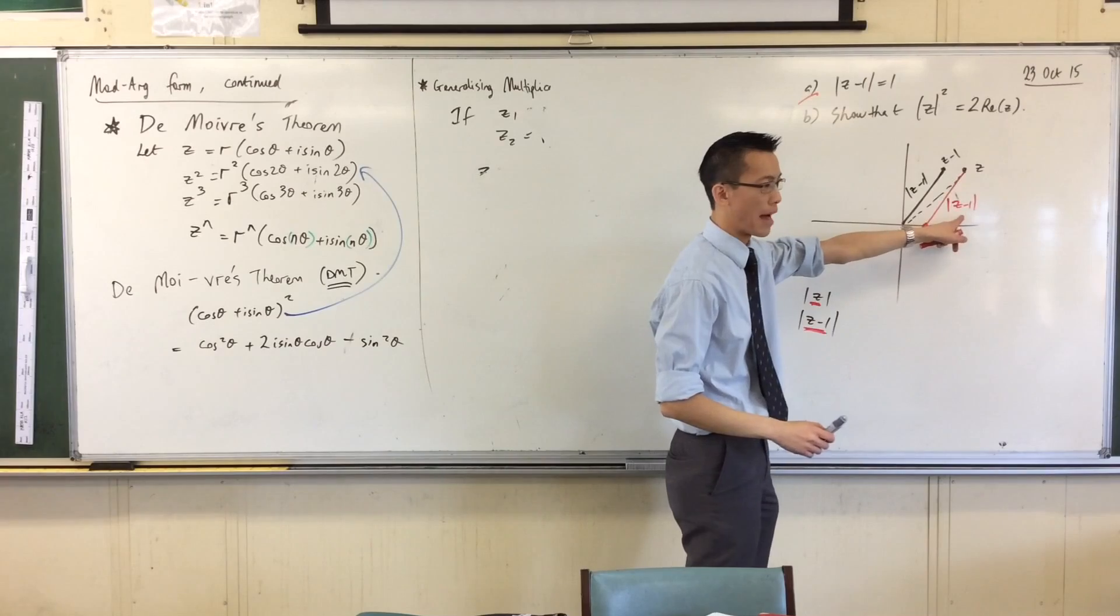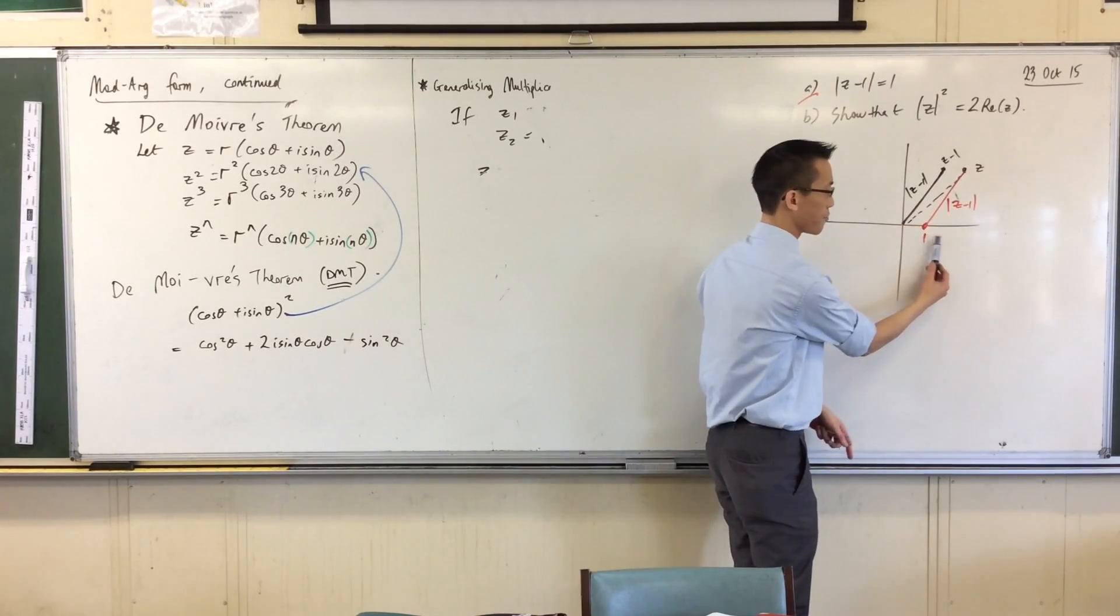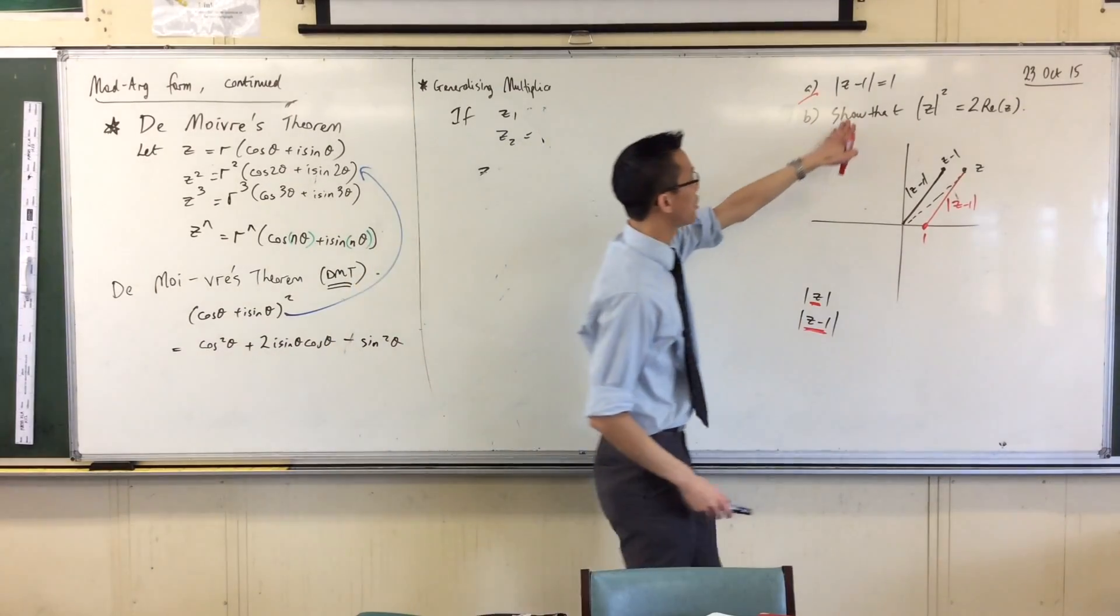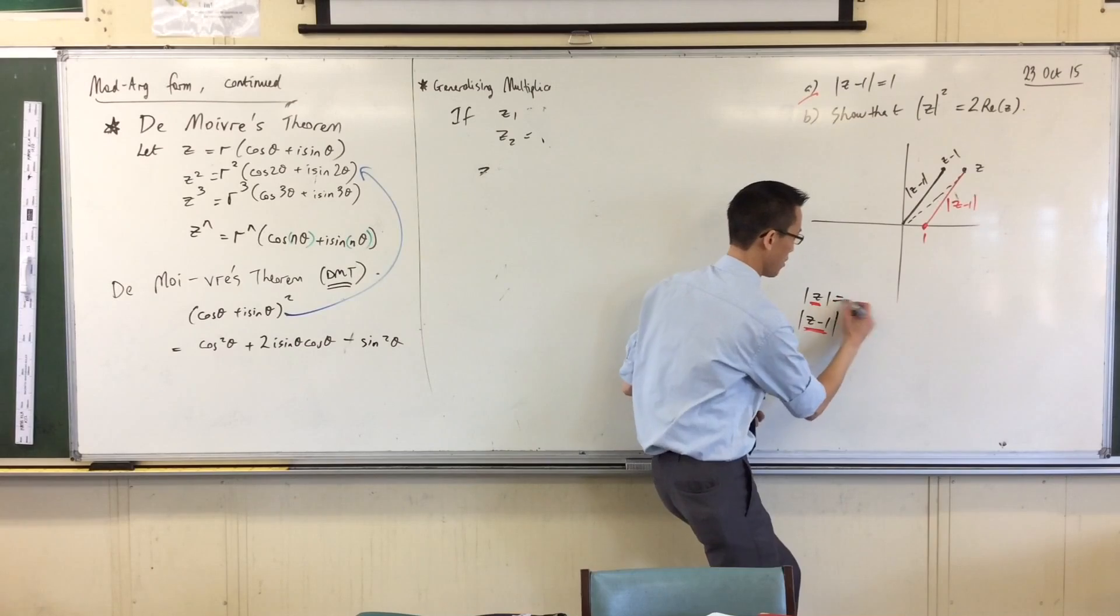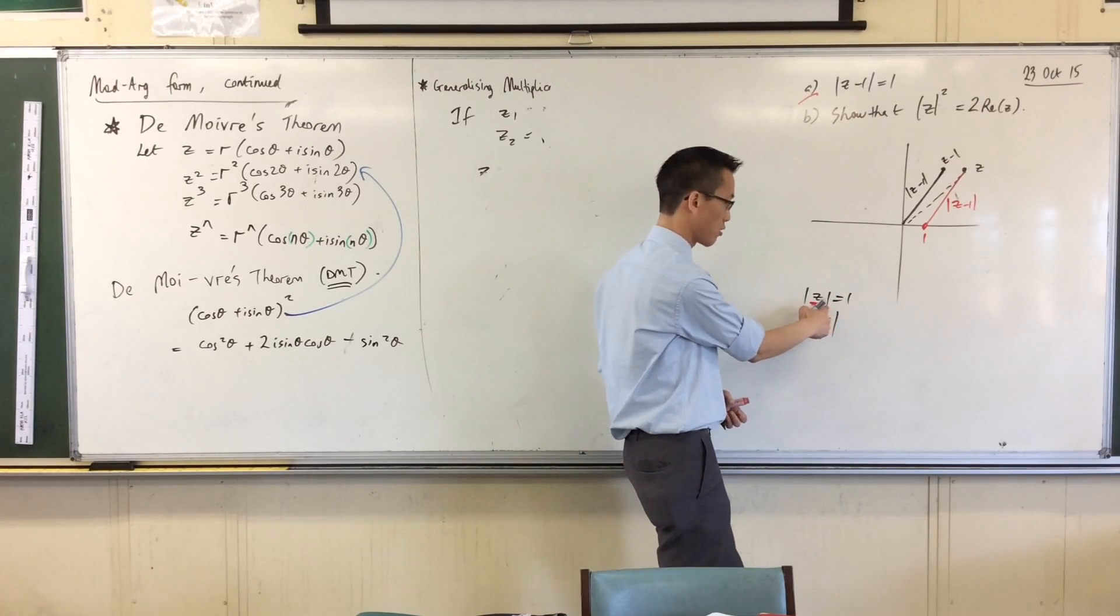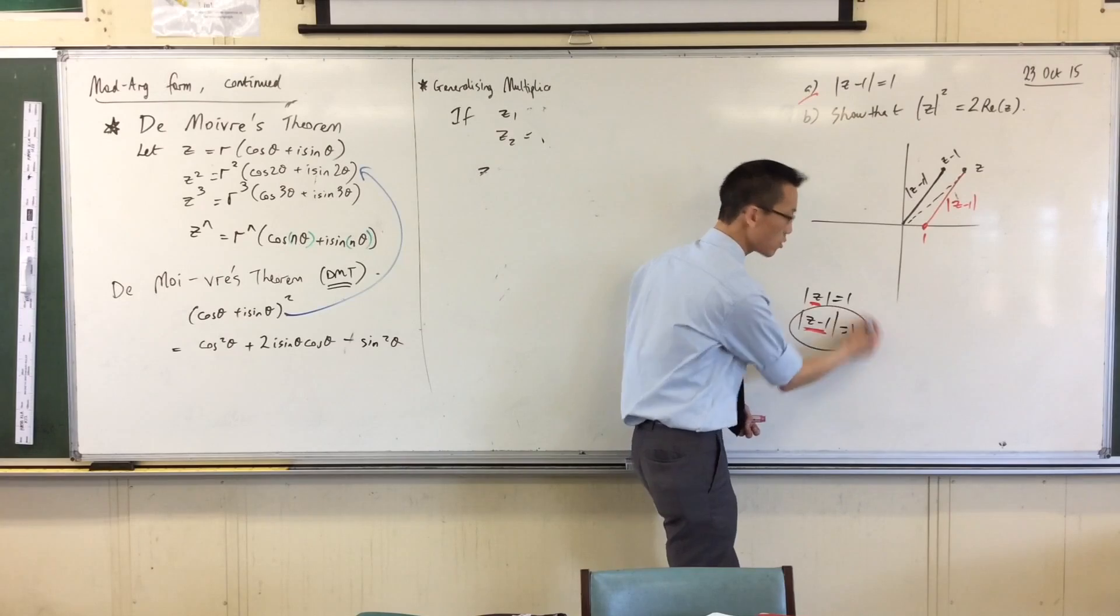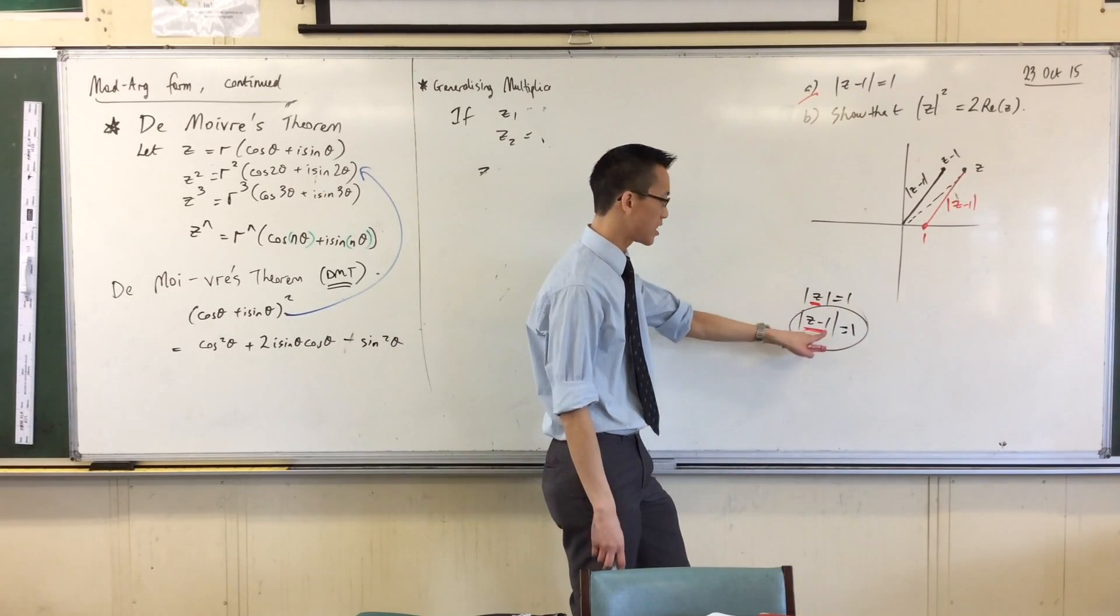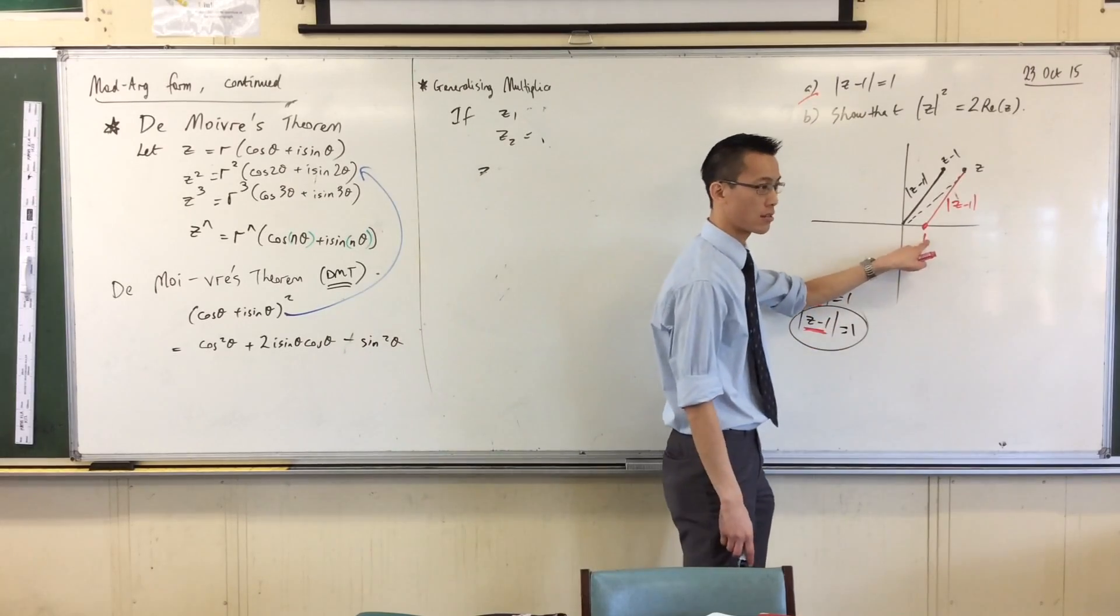Now what this means is, aha, here's my center now. I've adjusted my frame of reference, because I knew what it meant when this was equal to one. It was a circle, it was around the origin. This is also a circle, but it's not around the origin anymore. It's been shifted one unit to the right.